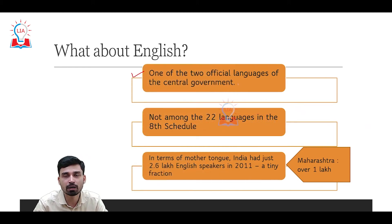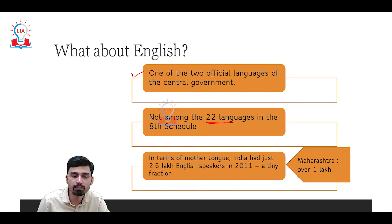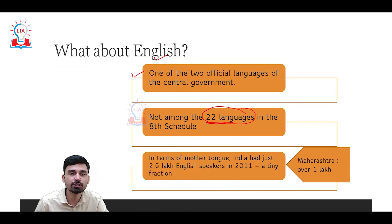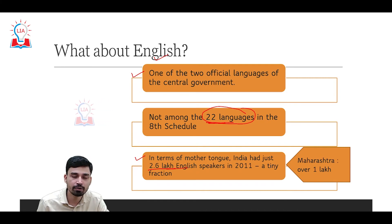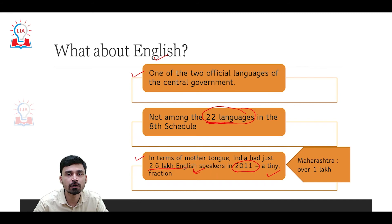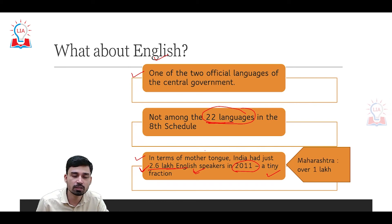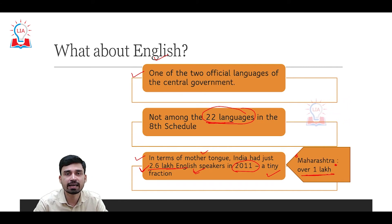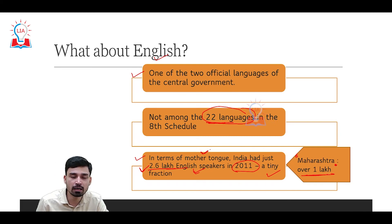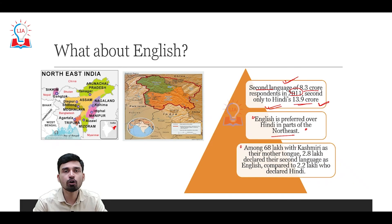Regarding English: it is one of the two official languages of the central government alongside Hindi, but it is not included in the 22 languages of the Eighth Schedule of the Constitution. English is an official language but not a scheduled language. In terms of mother tongue speakers, about 2.6 lakh people in India declared English as their mother tongue in 2011 — a very tiny fraction of the 120 crore total population. Of these 2.6 lakh, over 1 lakh are in Maharashtra alone, meaning roughly 40% of English mother-tongue speakers are concentrated there.